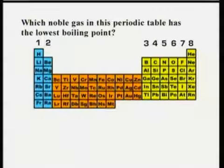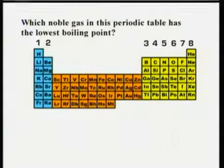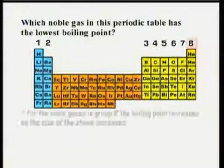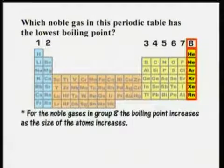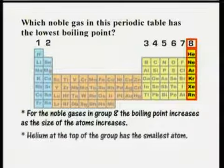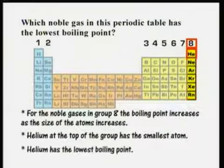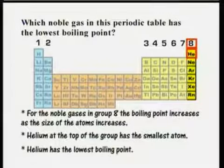Which noble gas in this periodic table has the lowest boiling point? For the noble gases in group 8, the boiling point increases as the size of the atoms increases. Helium, at the top of the group, has the smallest atom with one shell with two electrons. So helium must have the lowest boiling point.